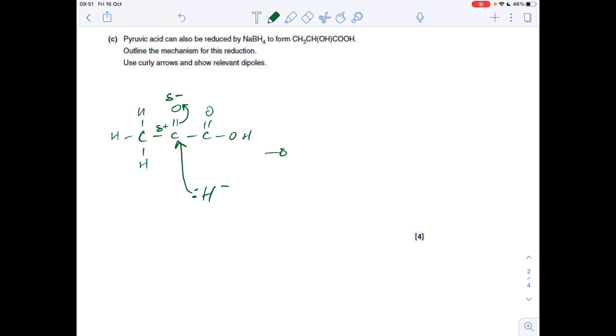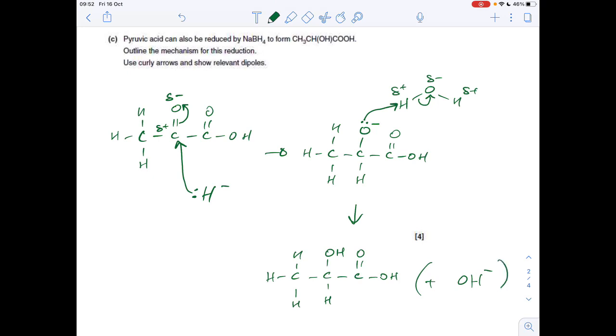That will generate an intermediate, which looks like that. And we bring a water molecule in now, put the dipoles on, and we're going to put the lone pair on there. We're going to take that lone pair, curly arrow, break that bond, and that's going to generate the product. So you'll notice we've also got a hydroxide ion form, but in the mark scheme for this question, that wasn't essential. So if you haven't drawn that, you wouldn't be penalised.